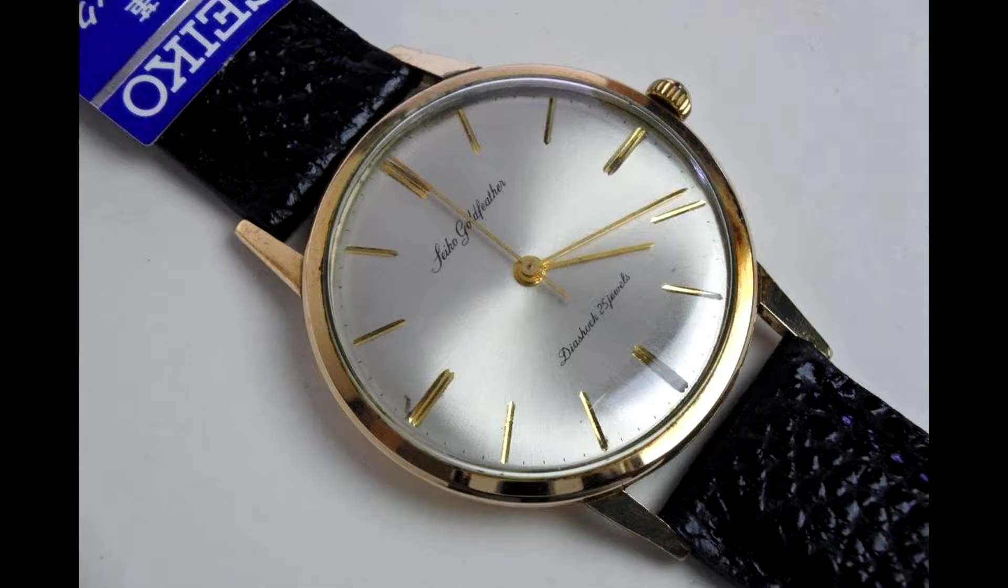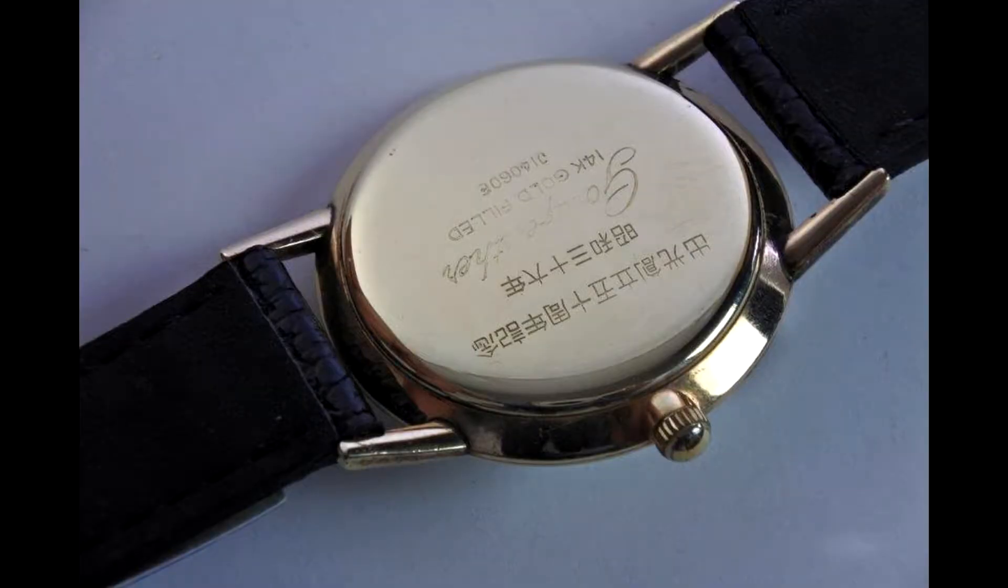So you're just looking at the dial there and now we're having a look at the back. The back on these is a pop top and that's one of the reasons they were able to make the case so thin. The problem with having a threaded screw back is it automatically adds a few millimeters to the thickness. That's one of the reasons they use pop tops on a lot of quartz watches in the 1980s, simply to reduce thickness.